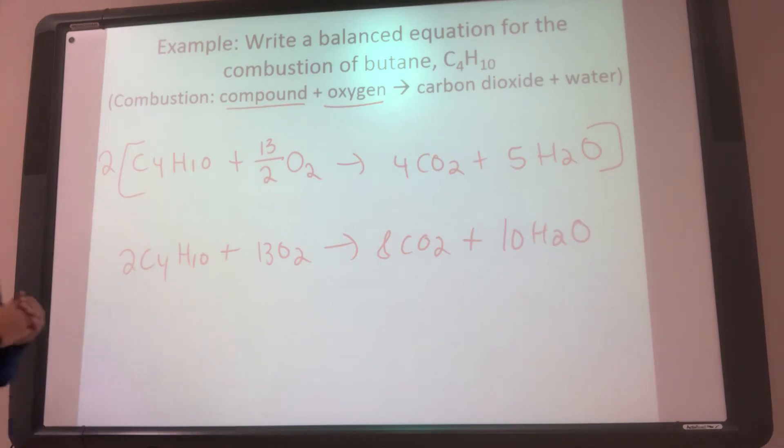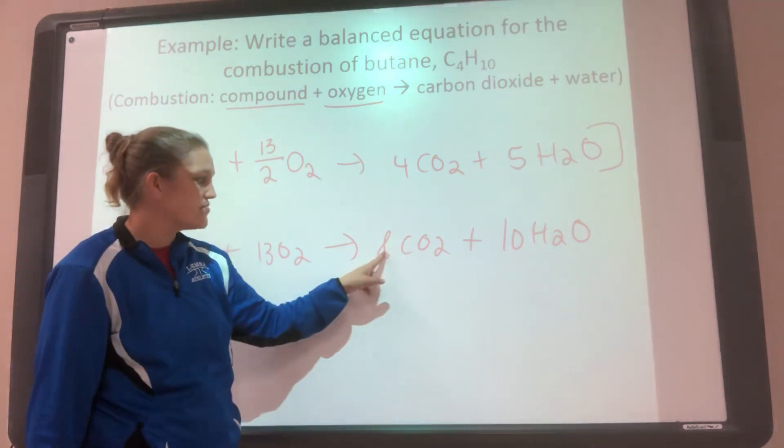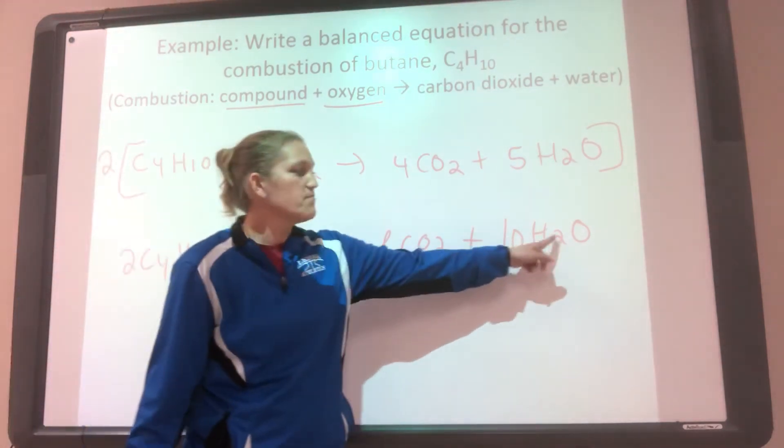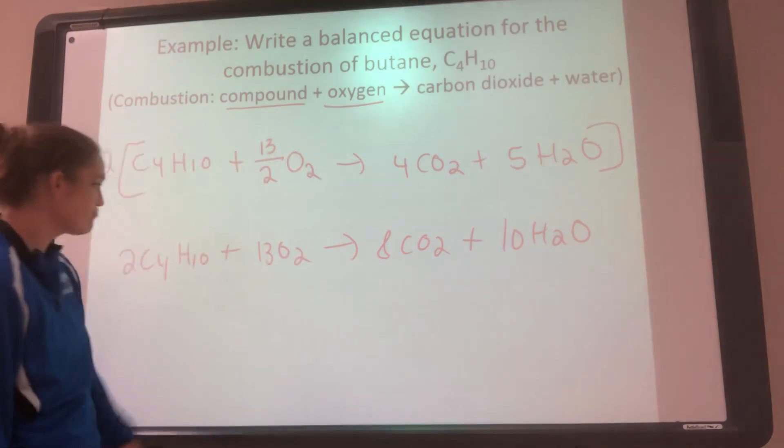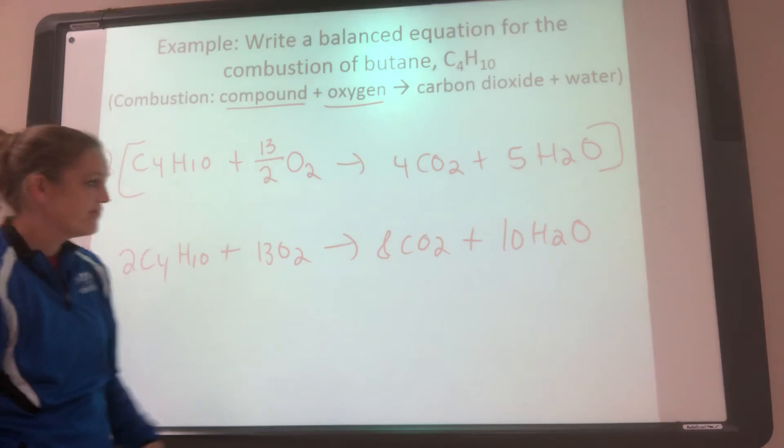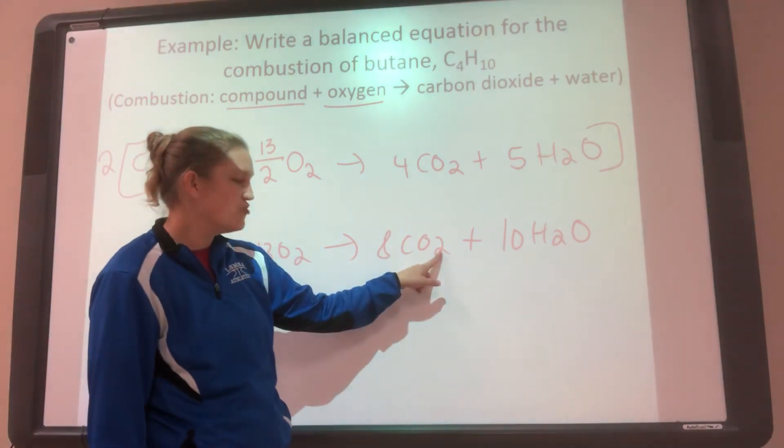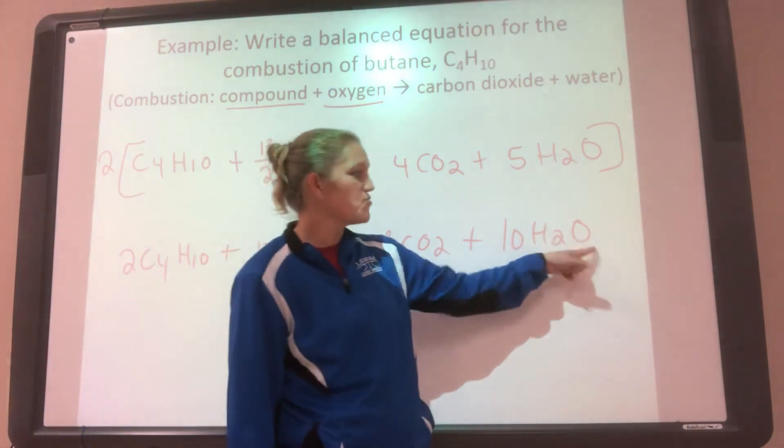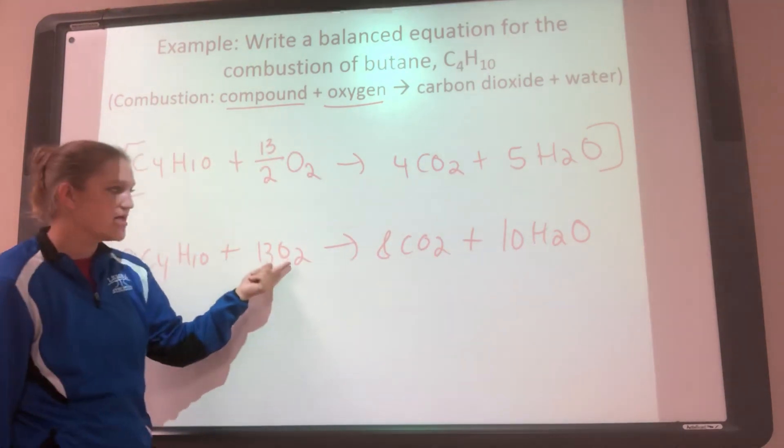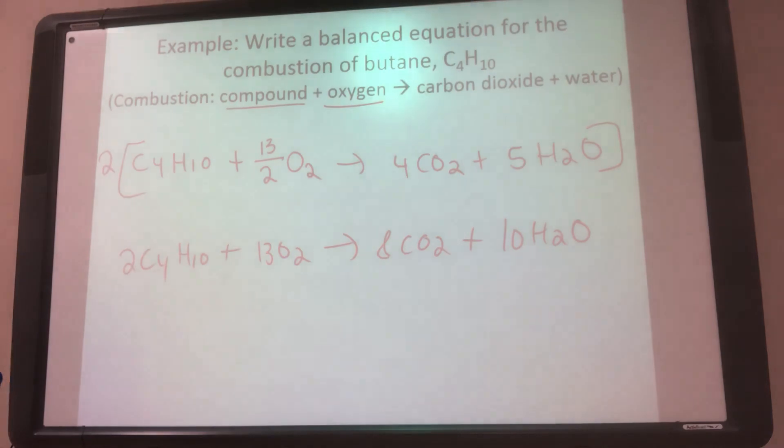Then you do one more little check. So carbon, 4 times 2 is 8. Carbon, 1 times 8 is 8. So carbons are good. Hydrogen, 10 times 2 is 20. 10 times 2 is 20. So my hydrogens are good. Oxygen, 13 times 2 is 26. Oxygen, 8 times 2 is 16. 10 times 1 is 10. 10 and 16 is 26, which is what I have here. So then I know I'm done. And now I have my balanced equation.